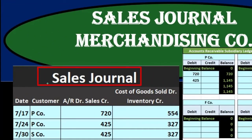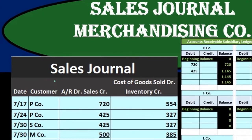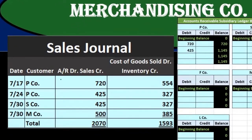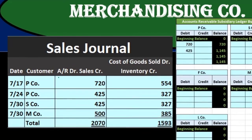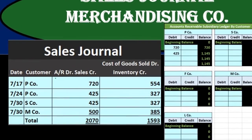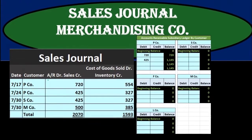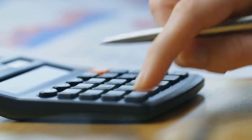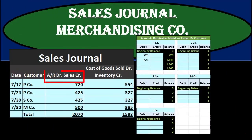The sales journal is looking at sales-type transactions, but more specifically it's looking for sales transactions on account — transactions where sales revenue is being recorded but cash is not being received. Instead, we will be debiting accounts receivable. It's a very specific type of journal in that we always have the same transaction: a debit to accounts receivable and a credit to sales.